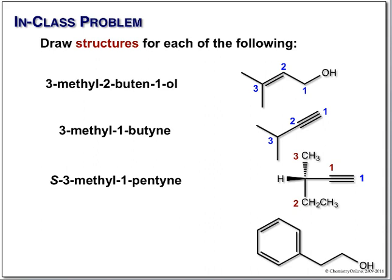Our last nomenclature compound: we have an alcohol on a side chain and a phenyl group. Because the alcohol is the highest priority functional group, we're going to name it as our parent, which gives us a two-carbon parent. A two-carbon alcohol is ethanol. Attached to carbon number two is a phenyl group, and this is simply 2-phenylethanol. You don't need the '1' to show the alcohol is at carbon one, because you only have two carbons — it would not be wrong to include it, but it's totally unnecessary.